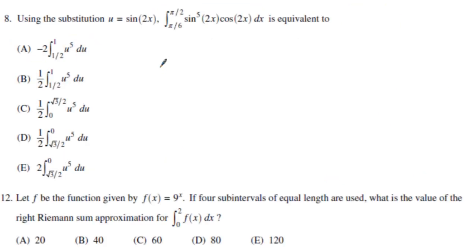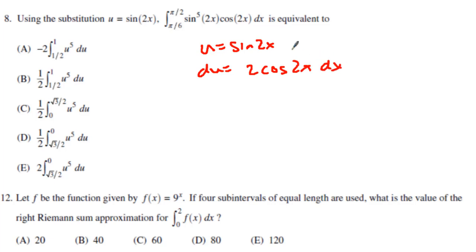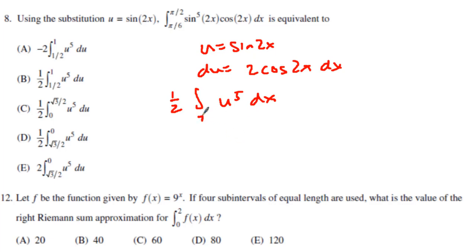Number 8 forces u substitution. I use u equals sine of 2x, so du equals 2 cosine of 2x dx. I get u to the fifth power with one half in front from that factor of 2. Plugging in the lower limit: sine of 2 times pi over 6 is sine of pi over 3, which is root 3 over 2. The upper limit: sine of 2 times pi over 2 is sine of pi, which equals 0. I'm left with answer D.